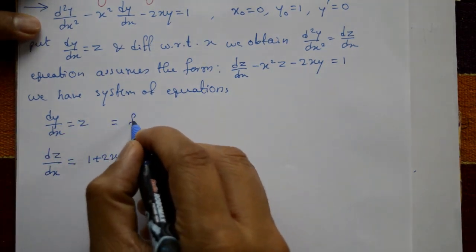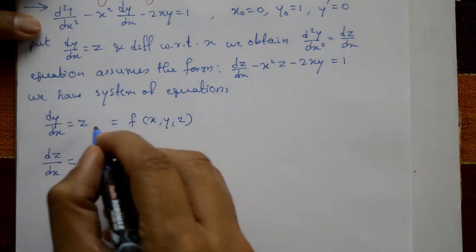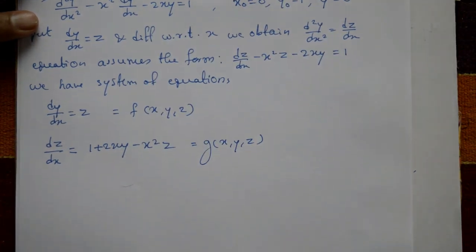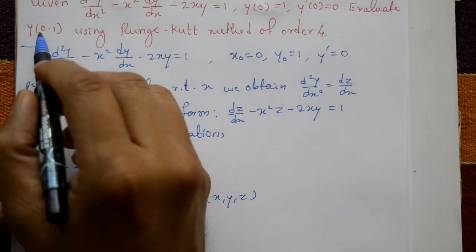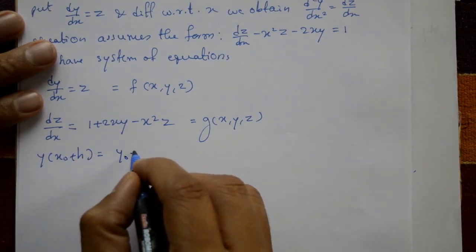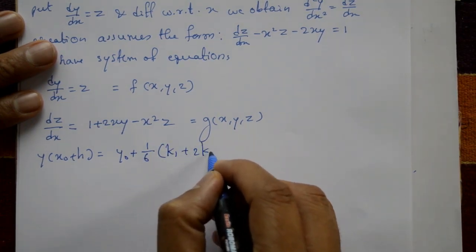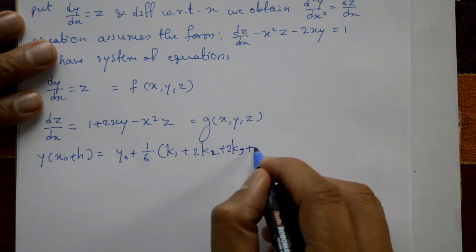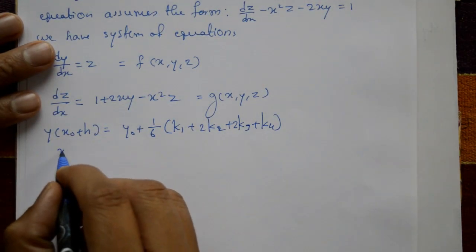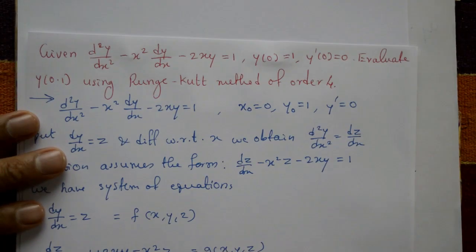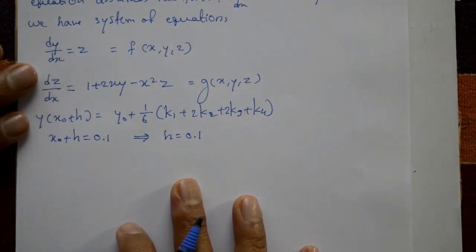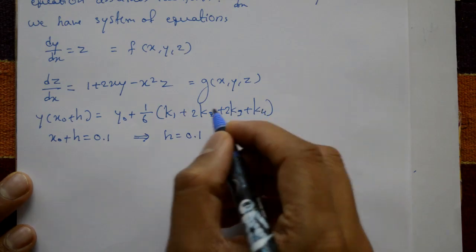The first equation is f(x, y, z) = z and the second is g(x, y, z) = 1 + 2xy − x²z. Using the RK4 method to find y(0.1), the formula is y(x₀ + h) = y₀ + (1/6)(k1 + 2k2 + 2k3 + k4). Since x₀ + h = 0.1 and x₀ = 0, we get h = 0.1.